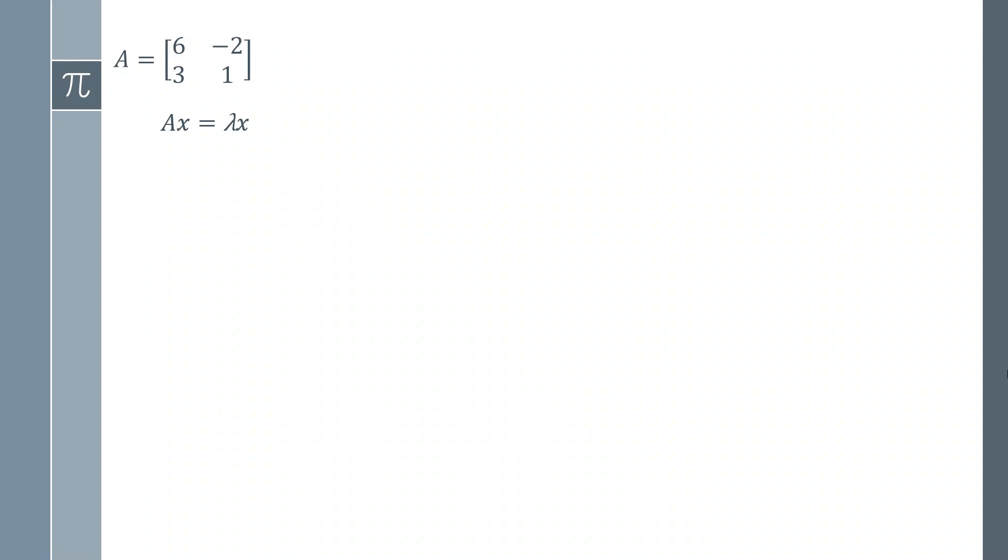So let's start by solving this. The first step is to get something that we can actually work with. Let's subtract lambda x from both sides, and we get this expression here. We can take a factor of the x, and we get this expression. If we're interested in x being non-zero, we simply have to find the determinant of A minus lambda I, and that's going to be equal to zero.